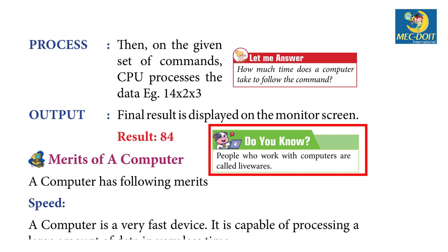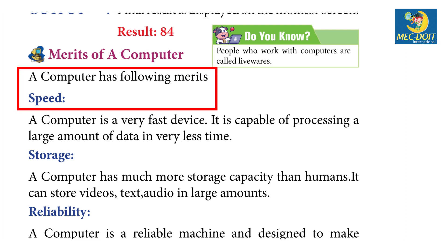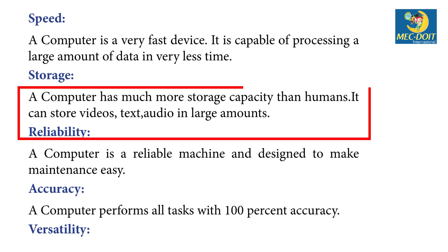Merits of a computer: Speed — a computer is a very fast device; it is capable of processing a large amount of data in very less time. Storage — a computer has much more storage capacity than humans; it can store videos, text, and audio in large amounts.